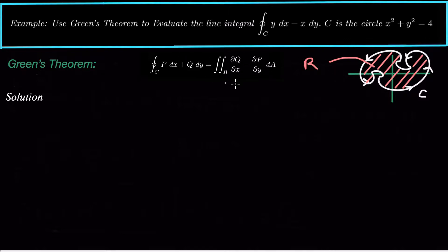What this says is that the line integral of a closed curve is really just a double integral over the region bounded by that closed curve, and what we integrate is partial Q partial x minus partial P partial y.